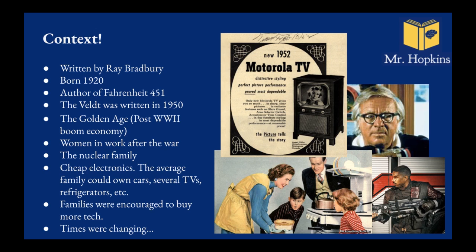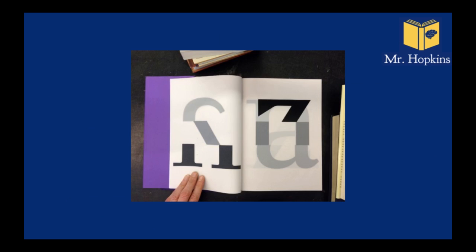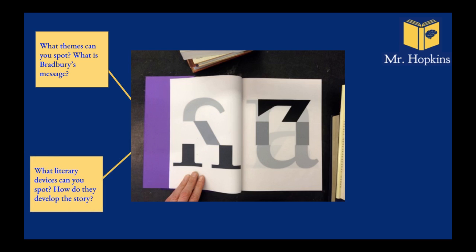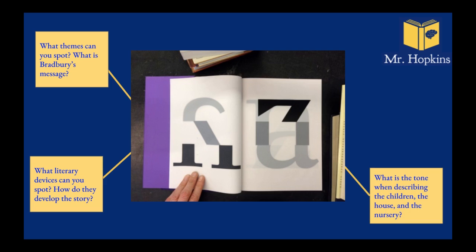The times were changing, though. Mealtimes where families would sit around the table talking to one another suddenly became time to watch TV. Mums who were typically at home were now deciding to go to work. This upset a lot of people. As you read the story and hear the audiobook, I want you to consider: what themes can you spot and what is Ray Bradbury's central message? What literary devices can you spot and how do they develop the story, themes, or characters? What is the tone when describing the children, the house, or the nursery? And how are the characters characterized?